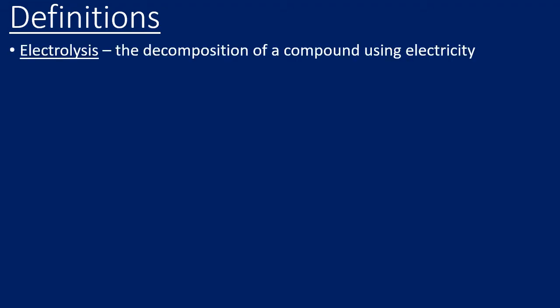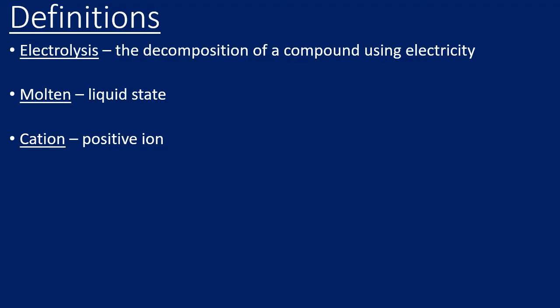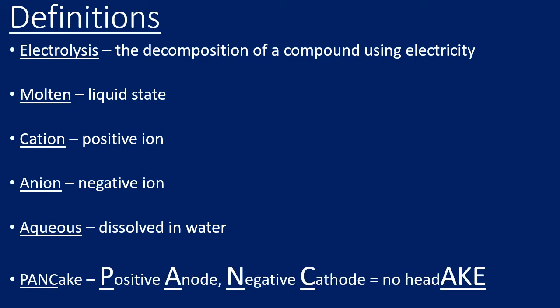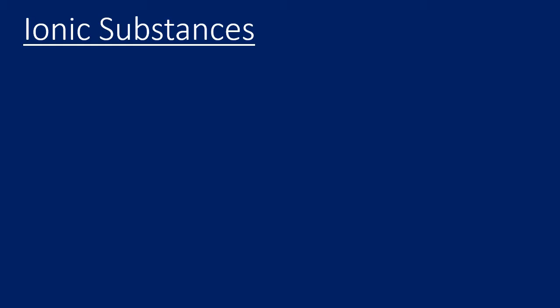Starting with some definitions: electrolysis is the decomposition or breakdown of a compound using electricity. The term 'molten' means something is in its liquid state. A cation is a positively charged ion; an anion is a negatively charged ion. 'Aqueous' means the substance is dissolved in water. I use the term 'pancake' to help students remember: positive anode, negative cathode — so you won't get a headache.